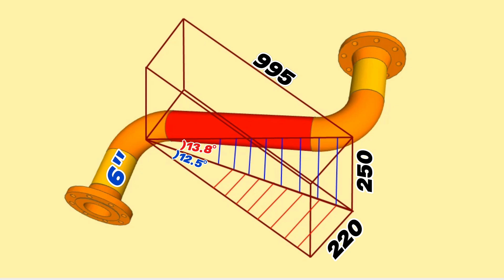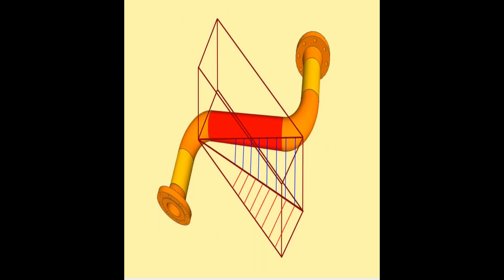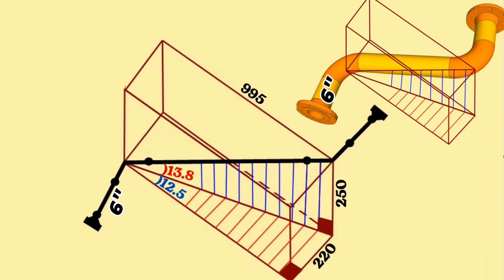We will perform the calculations in this video on a 6 inch piping isometric drawing. In order to understand the work more easily, I have additionally prepared a 3D model view of this pipeline.